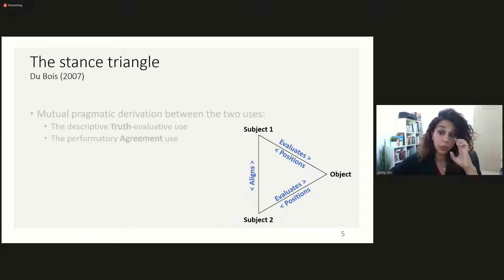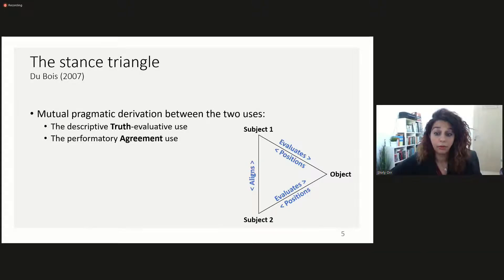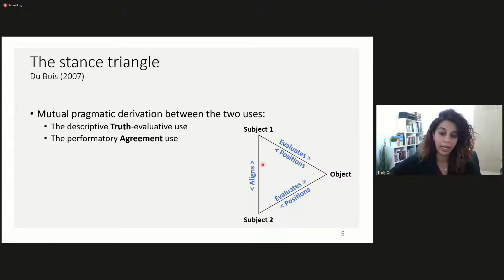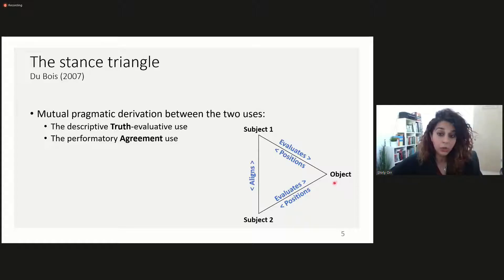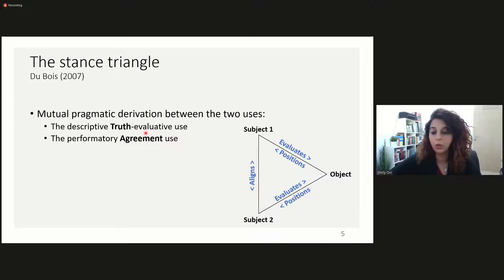To model the use of the predicate 'true' in interaction, we use DuBois' stance triangle. By applying the stance triangle, we were able to explain the mutual pragmatic derivation between the two uses. According to the stance triangle, when two speakers evaluate an object in the same way — the two vectors of evaluation — we can infer their alignment. And when one speaker aligns with the evaluation of another, we can infer her implicit evaluation. This also applies to 'true': when two speakers truth-evaluate some assertion in the same way, we can infer their agreement, and when one speaker agrees with another's evaluation, we can also infer her truth evaluation.